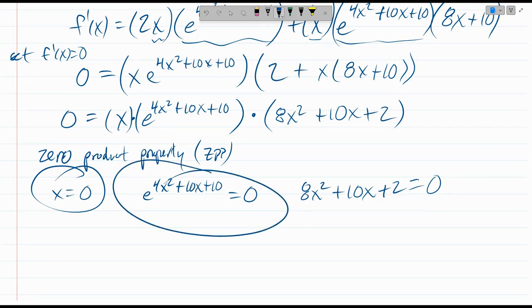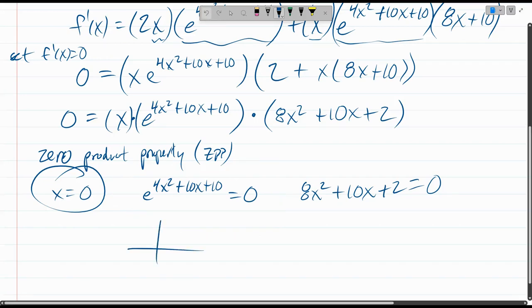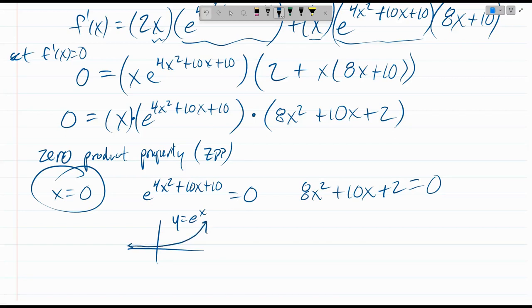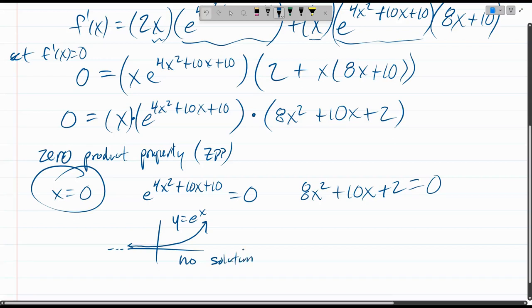Well, an exponential function will never equal zero. If you graph the y equals e to the x function, the graph looks like this. It gets close to zero. The y value gets close to zero, but the y value never equals zero. So there's no solution for this middle one. All right, third one.